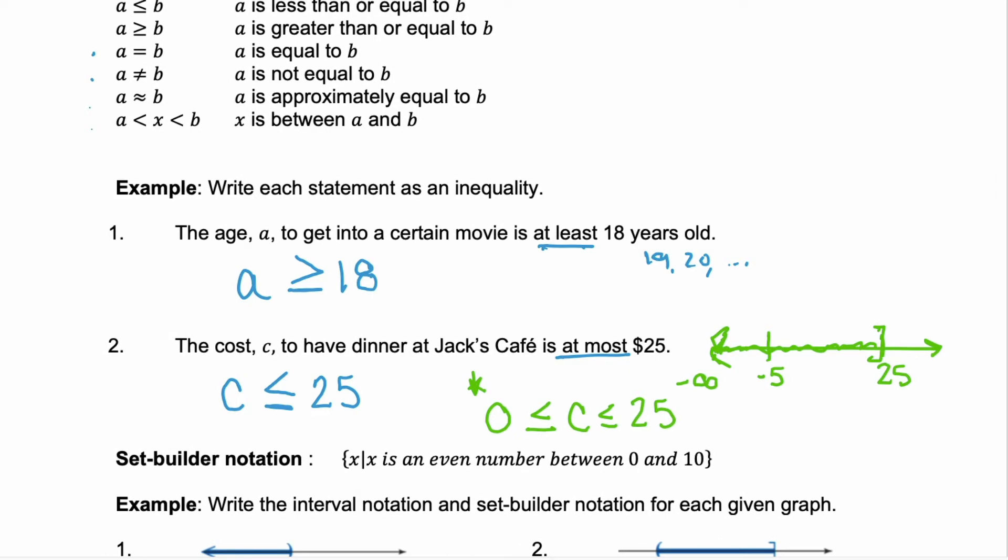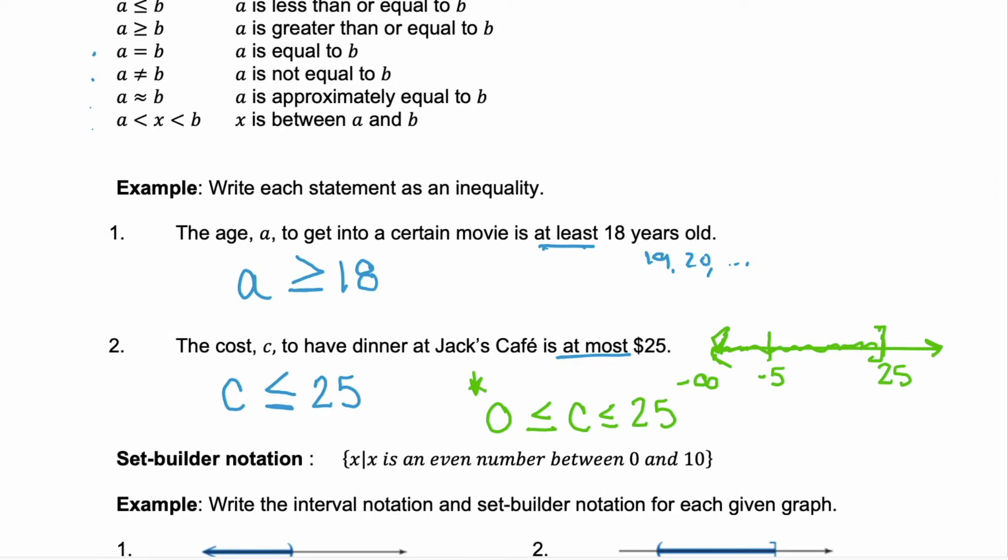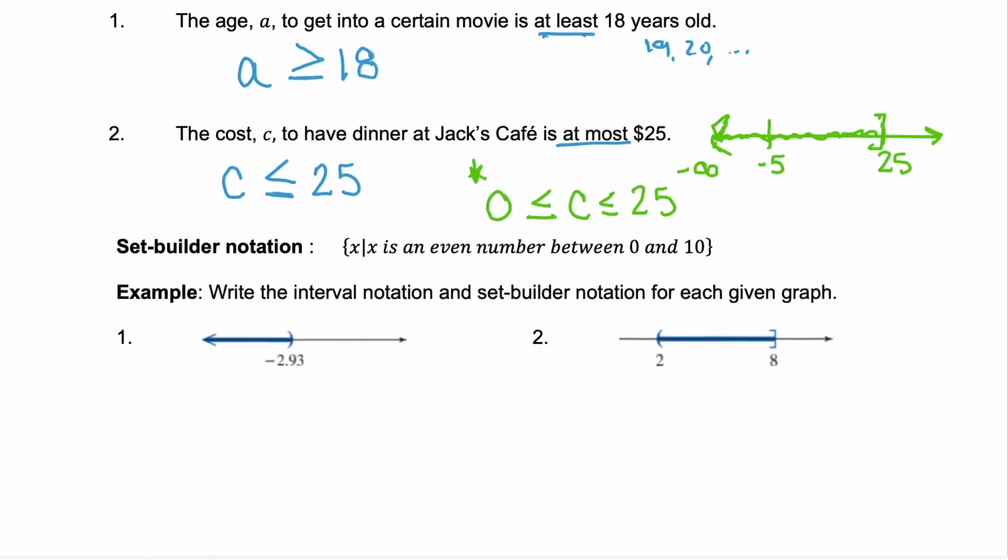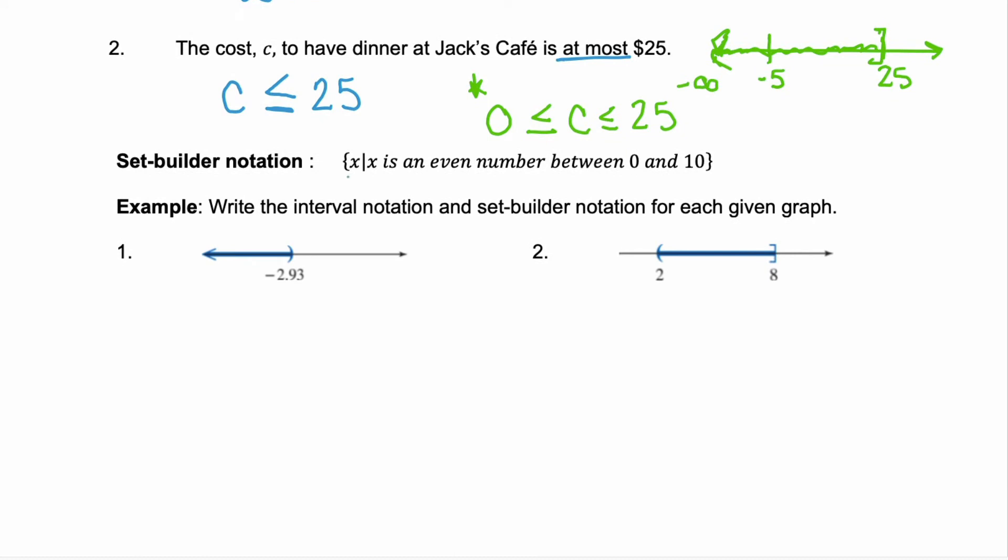Now inequalities can also be written in set-builder notation. Remember set-builder notation is with these braces. It starts with the variable that we're talking about, has that vertical line that represents such that, and then it tells you the restrictions on that variable. So this one is read x such that x is an even number between 0 and 10.